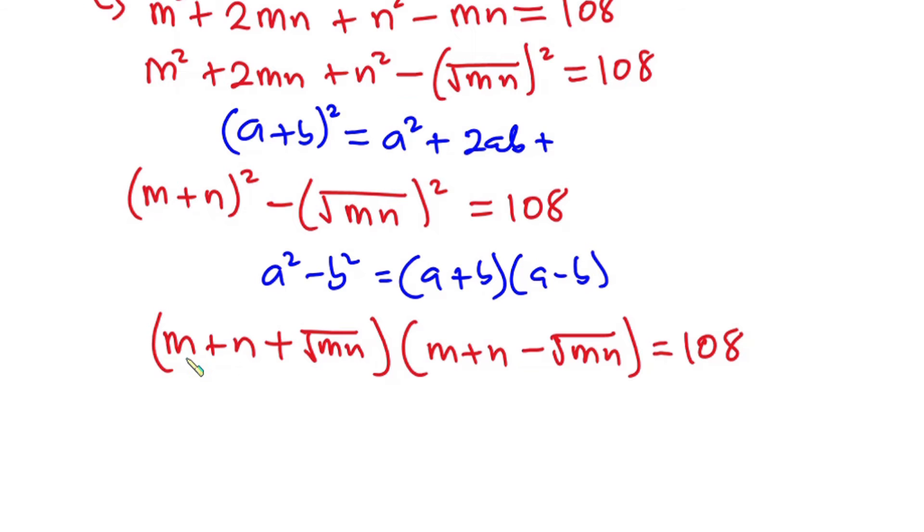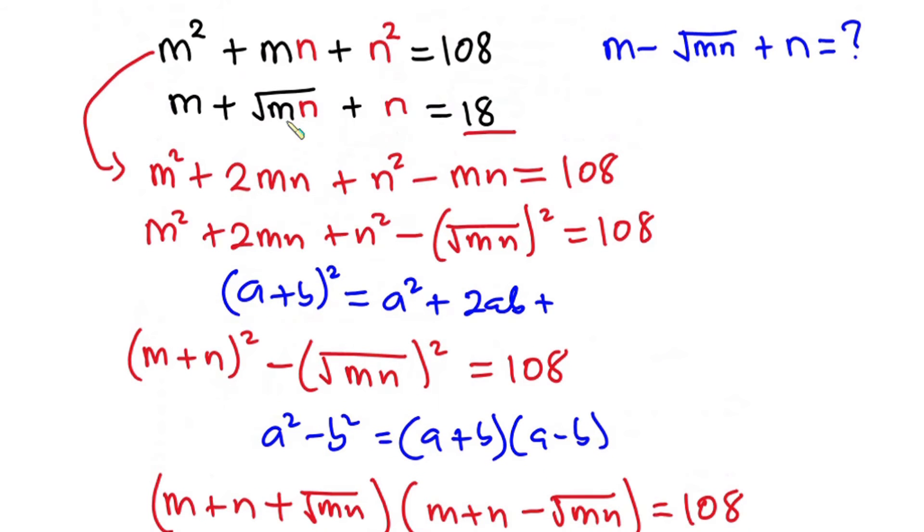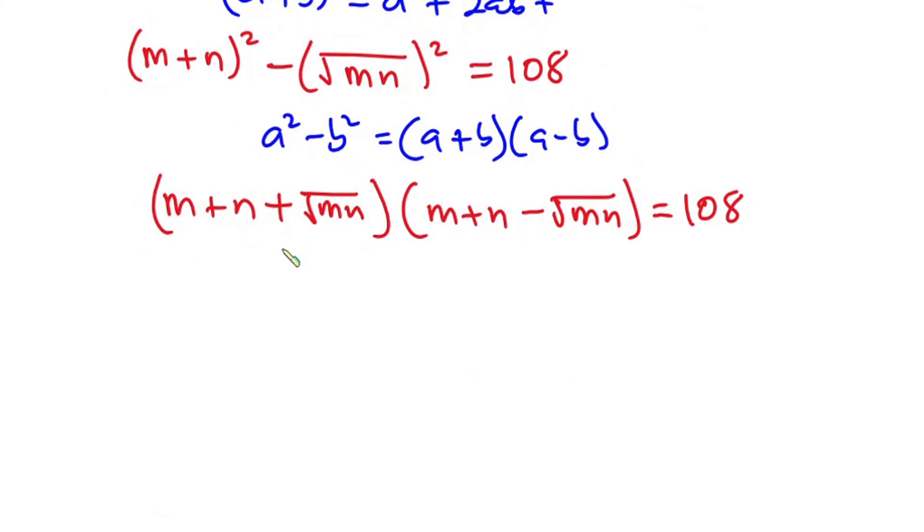Now this factor was given in the question, which is 18. So in place of this one I'm going to put 18. We have 18 times m plus n minus the square root of mn, and this equals 108.